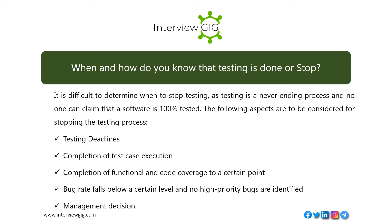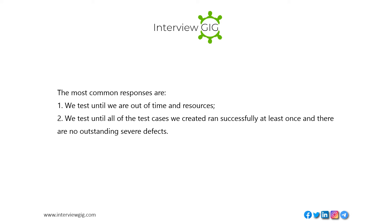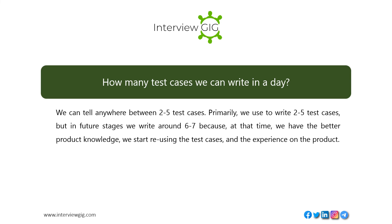When and how do you know that testing is done? It is difficult to determine when to stop testing, as testing is a never-ending process and no one can claim a software is 100% tested. Aspects to consider include: testing deadlines, completion of test case execution, completion of functional and code coverage to a certain point, bug rate falls below a certain level with no high-priority bugs identified, and management decision. Common responses: we test until we are out of time and resources, or until all test cases ran successfully at least once with no outstanding severe defects.